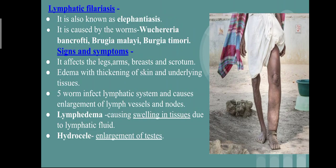Other symptoms are also observed. Wuchereria bancrofti affects the legs, arms, breasts, and scrotum. There is edematous thickening of skin and underlying tissues. In lymphatic filariasis, the worms infect the lymphatic system and cause enlargement of lymph vessels and nodes. It also shows lymphedema, which causes swelling in tissues due to lymphatic fluid. It also forms hydrocele — that is, the testes are enlarged due to accumulation of lymph in the testes.